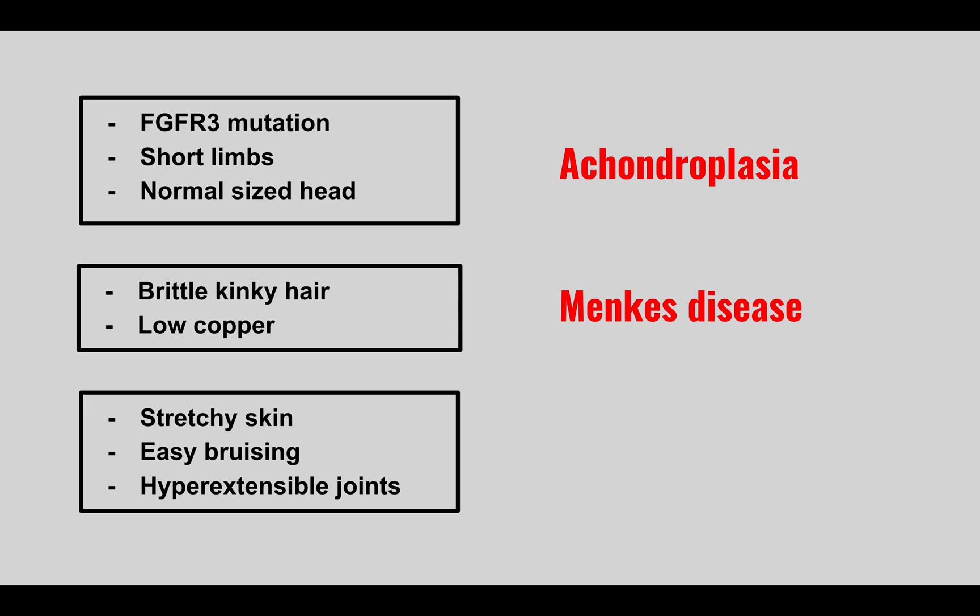The next condition: a patient with stretchy skin, easy bruising, and hyperextensible joints. This is Ehlers-Danlos syndrome — a collagen mutation. Sometimes they'll show a picture of someone with really stretchy, flexible skin, and that's going to be Ehlers-Danlos.